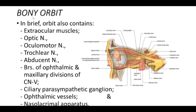There is the optic nerve, which is the main nerve of the eyeball itself. The oculomotor nerve is the main nerve of the extraocular muscles. The trochlear nerve supplies the superior oblique muscle, and the abducens nerve supplies the lateral rectus muscle of the eyeball. The branches of the ophthalmic and maxillary divisions of cranial nerve five — the trigeminal — are for sensory supply.